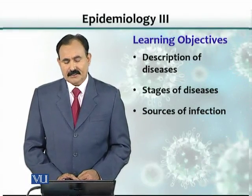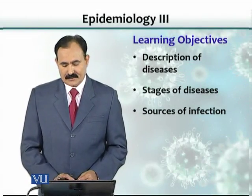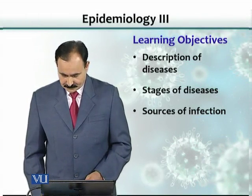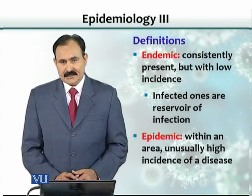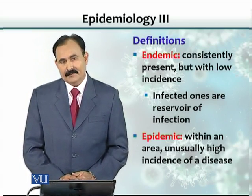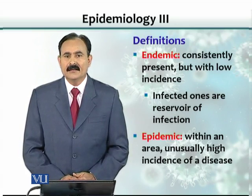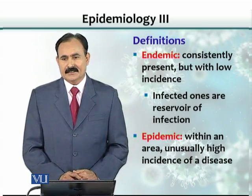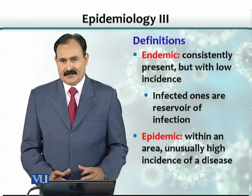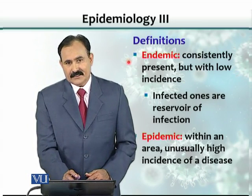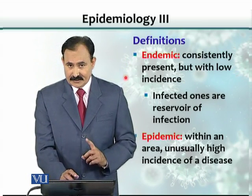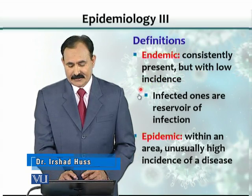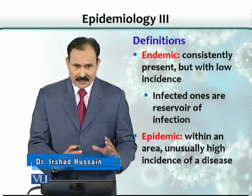Learning objectives include description of diseases, stages of diseases, and sources of infection. Diseases can be endemic, epidemic, or pandemic — these are the three terms used for diseases with respect to the area. Endemic diseases are those that are consistently present but with low incidence and are confined to a small area.